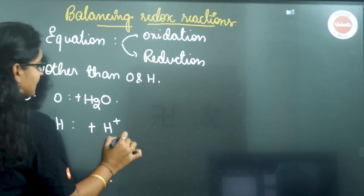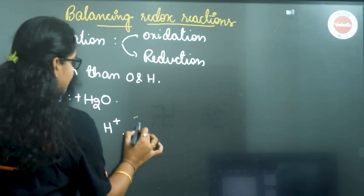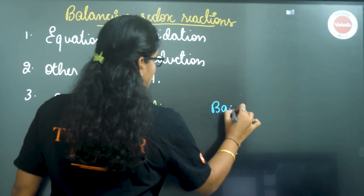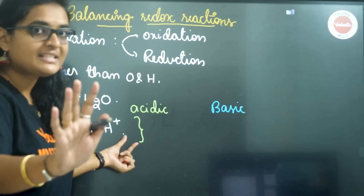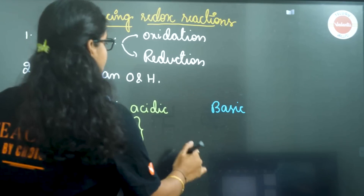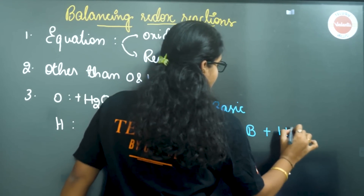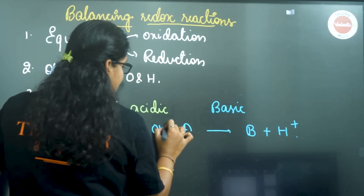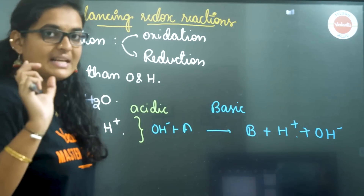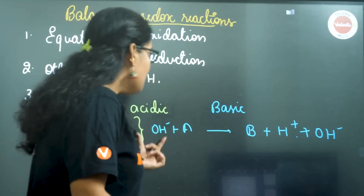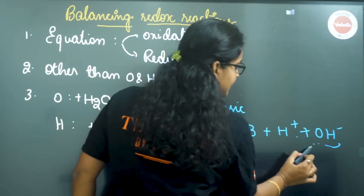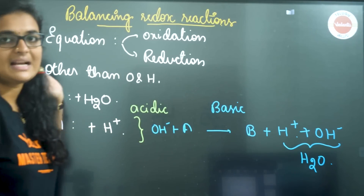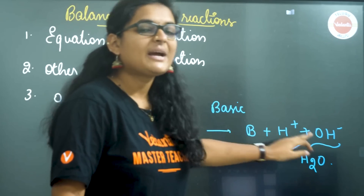Now, let's add H+ to it. Here there is a small variation. This you will be doing in acidic medium. For basic medium, it is the same for hydrogen balance, but we add OH− as well. Any H+ you add, add the same number of OH− to both sides of the equation. H+ and OH− combine to form water molecules. So in acidic medium, only H+ is added. In basic medium, both H+ and OH− are added.